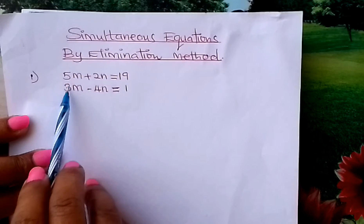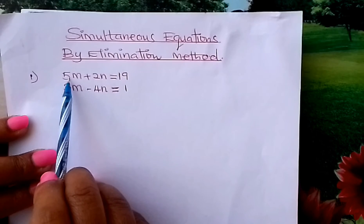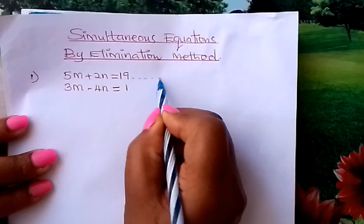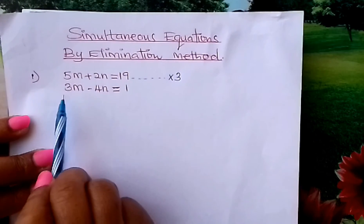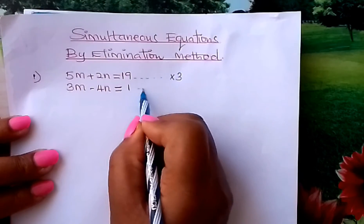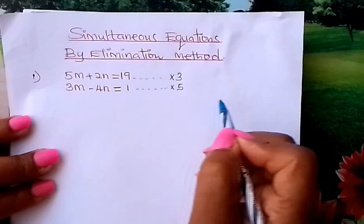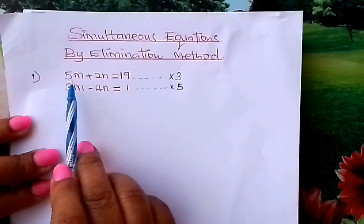The LCM for these two is 15. How do you make this 15? By multiplying by 3. So multiply the first one by 3. How do you make this 15? Multiply it by 5. Let's do the multiplication now.